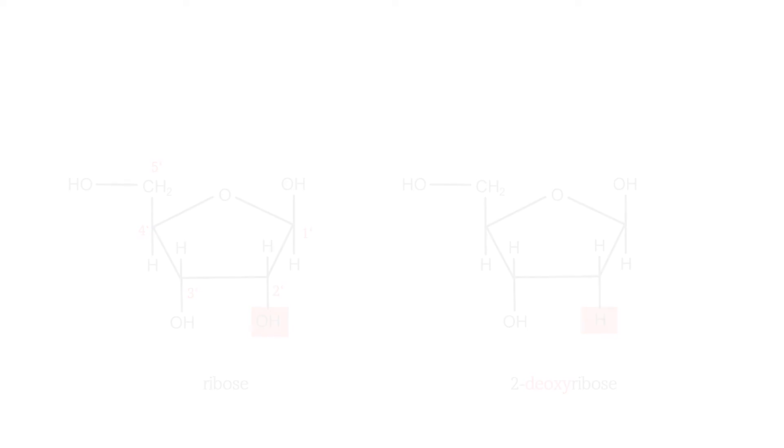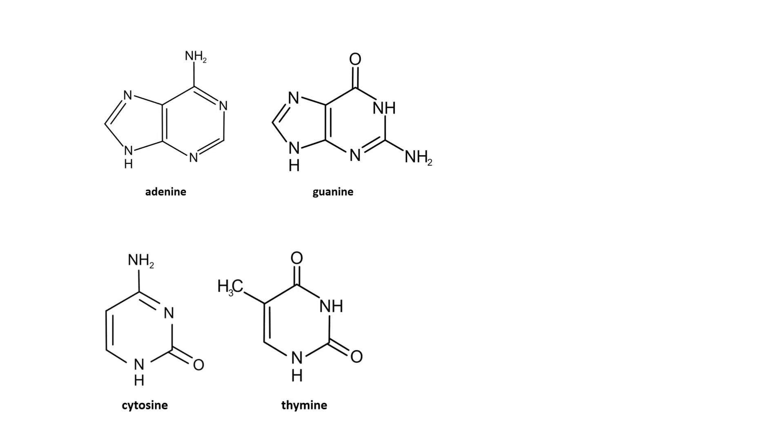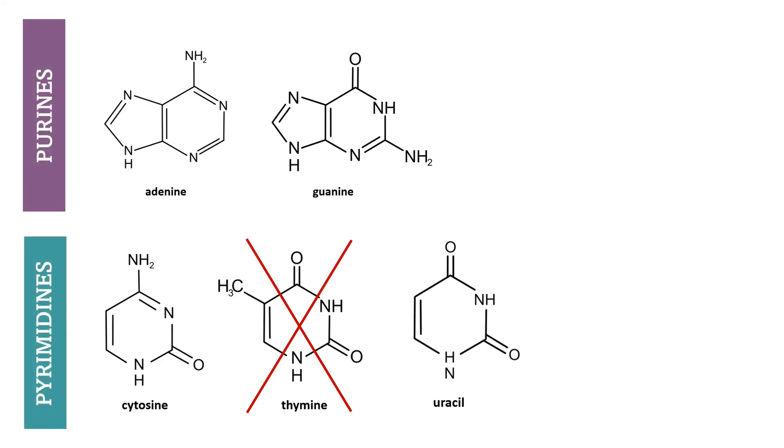What is more, the bases in RNA differ from DNA, as there is uracil instead of thymine. Uracil is a pyrimidine, just like thymine, and also pairs with adenine.